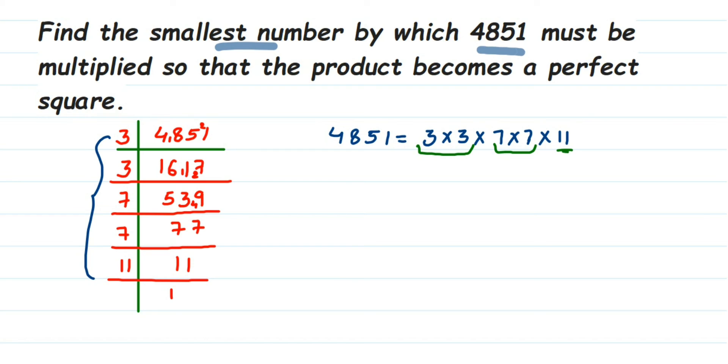So the smallest number to be multiplied will be 11, because if there was another 11 here multiplied—suppose I multiply with 11—then it's forming one pair, right? So smallest number here will become 11. So it's very simple. Whenever they ask you smallest number to be multiplied, you just look for the number which is not paired, and that will be the smallest number to be multiplied.